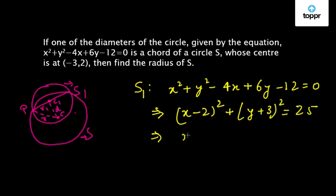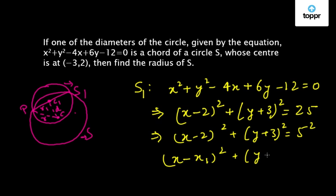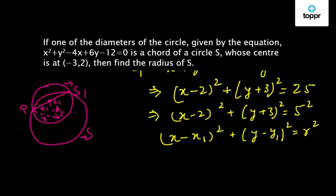This implies that (x - 2)² + (y + 3)² = 5², which is of the form (x - x1)² + (y - y1)² = R². So the center of the circle S1 will be (x1, y1).